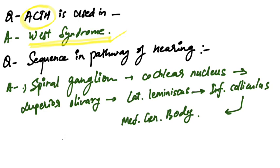The sequence in the pathway of hearing: First is the spiral ganglion, then it is conducted through cochlear nucleus, then superior olivary nucleus, lateral lemniscus, inferior colliculus, and then medial geniculate body.